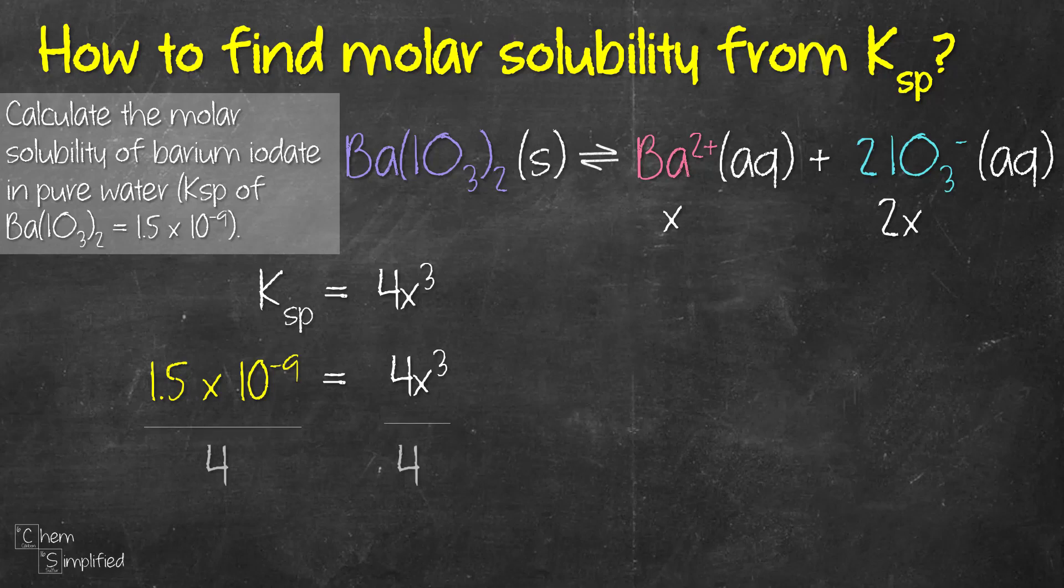So to solve for x we need to first divide both sides of the equation with 4 and then after that we need to take a cube root. We do cube root because we have 4x to the power of 3. So we need to take a cube root for that so that we can find x. So we need to plug the number on our calculator. We have 1.5 times 10 to the power of negative 9 divide by 4 and then do a cube root.